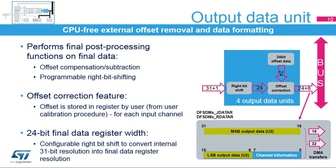The output data unit adjusts the final data before it is written to the final data register. An offset value can be defined in the offset register and will be automatically subtracted from the data result for each channel. The correct offset values are determined using a calibration procedure, which should be programmed in user firmware and depends on the type of Sigma Delta modulator connected and application needs.